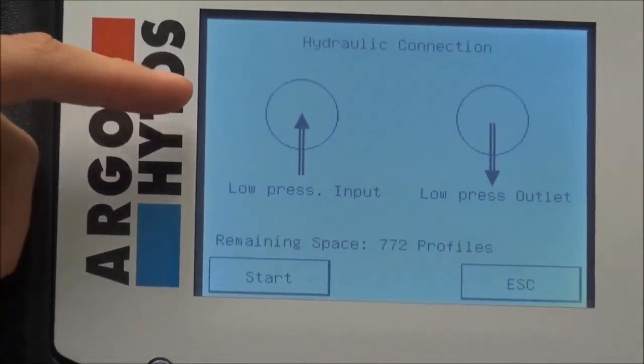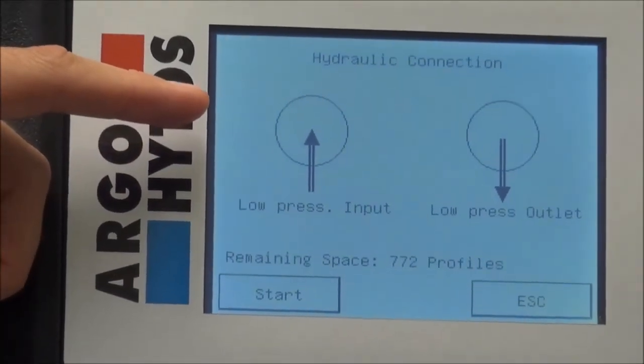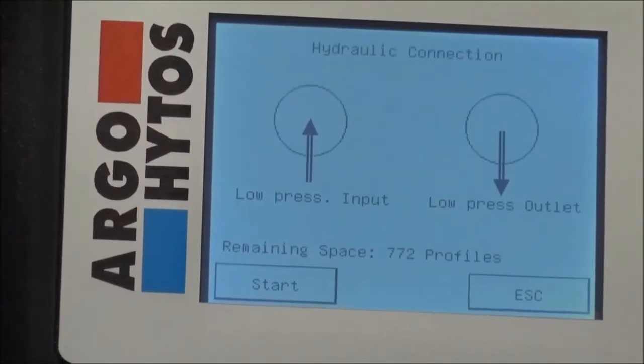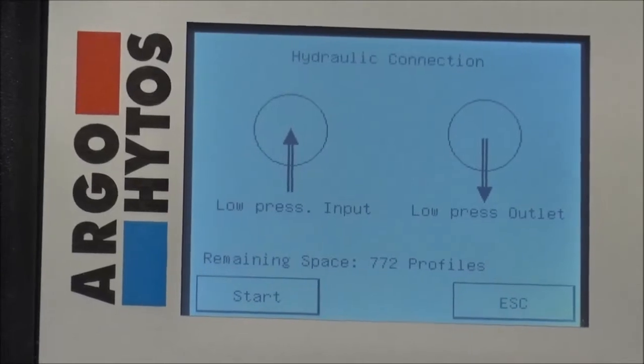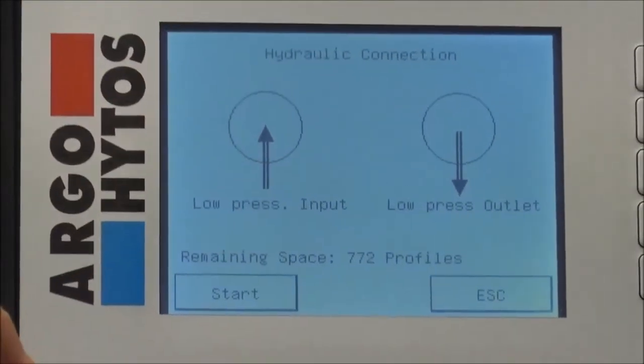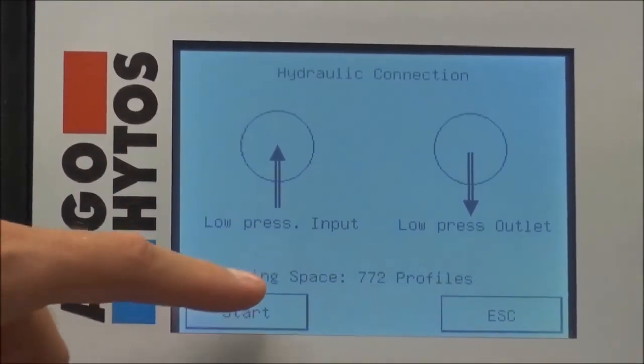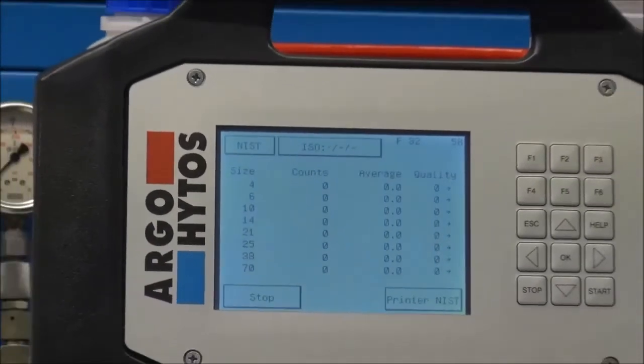Another time you are just getting information how the connection should be done. We have done it exactly in that way. So we take low pressure measurement with sampling from the input and low pressure output is our return. That is how we connect it. So now we push the start button to start the measurement.